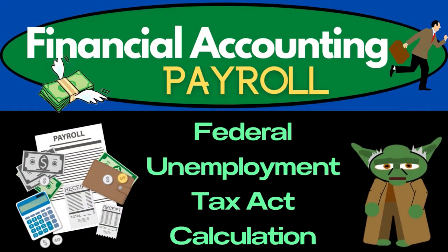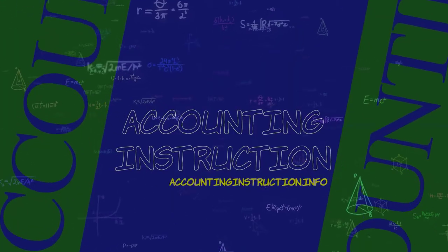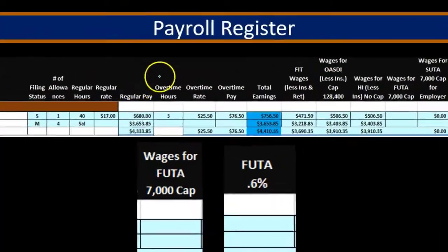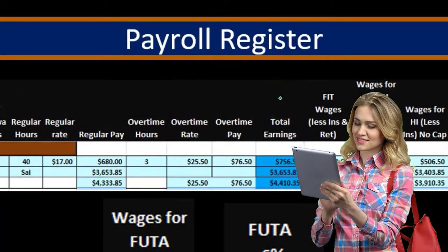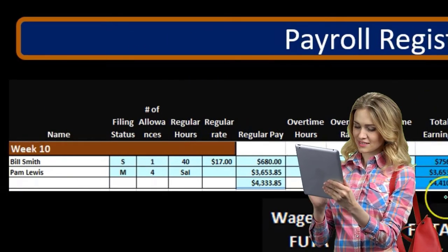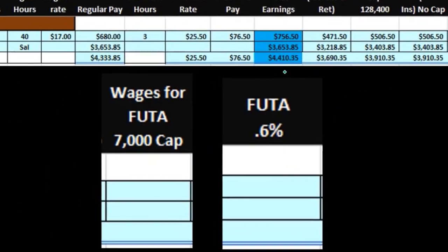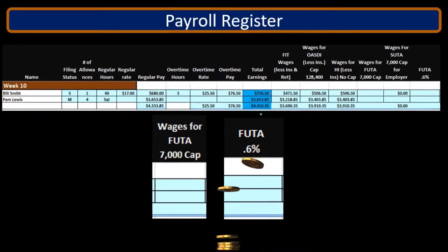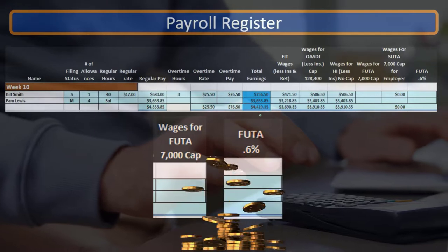In this presentation we will take a look at the calculation for federal unemployment tax, or FUTA. We're here on our payroll register where we have our two employees. We have the regular pay and the total earnings, and now we're looking for the FUTA earnings. We want to make sure that we know the difference between the total earnings and the different types of earnings, or the different adjustments to earnings, in order to use them to calculate our taxes.